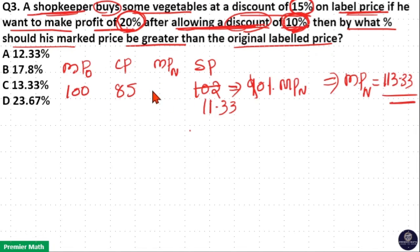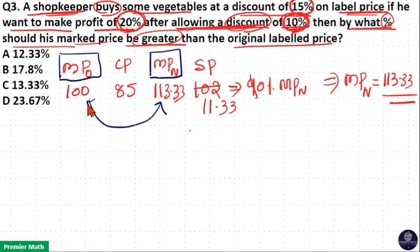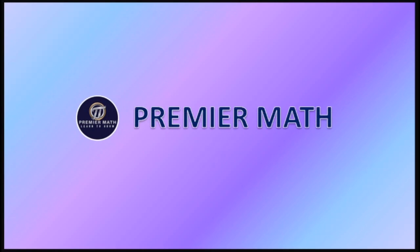Now we need to find by what percentage the new marked price should be greater than the original label price. The original label price was 100 and the new label price is 113.33. The difference between these two is 13.33%. So option C is your answer.